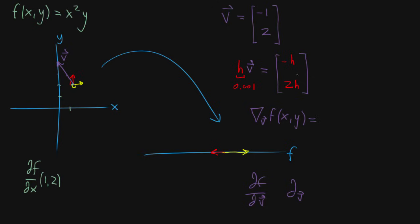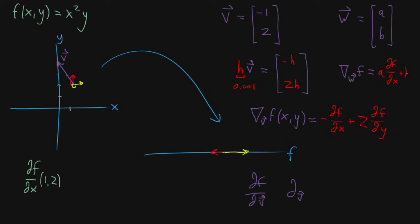For this particular example, a good guess is to say: we take a negative step in the x direction, so you think of whatever change is caused by such a step in the x direction and take the negative of that. Then it's two steps in the y direction, so whatever the change caused by a tiny step in the y direction, take two of those — two times partial f over partial y. This is actually how you calculate it. More generally, for a vector w with components a and b, the directional derivative in the direction of w equals a times the partial derivative of f with respect to x, plus b times the partial derivative of f with respect to y.